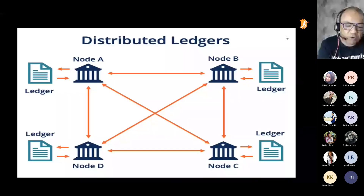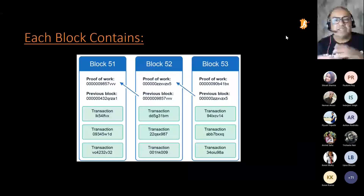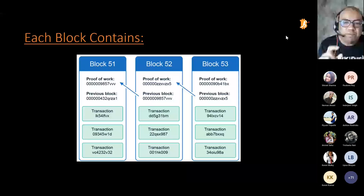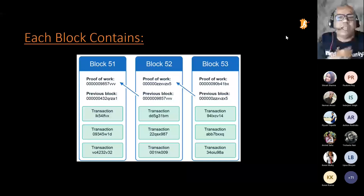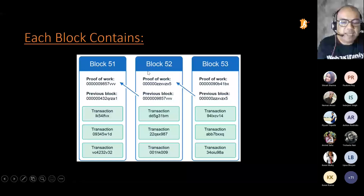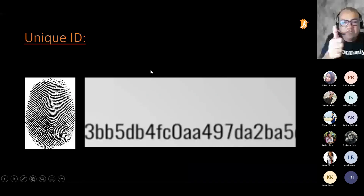Every block has some information — specifically a list of transactions, like sending Bitcoin to somebody or receiving Bitcoin. Every block is unique, so every block has a unique identification number, like an Aadhaar card. My Aadhaar card is unique to me — you can't copy that number. Similarly, every block has a hash attached to it. Hash is like a fingerprint — it is unique and cannot be changed.